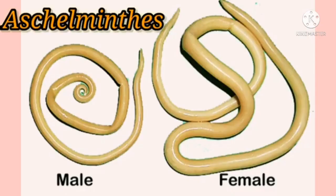Fourth phylum — phylum Aschelminthes, roundworms. Aschelminthes are bilaterally symmetrical, triploblastic animals. The body cavity is pseudocoelom. What do you mean by pseudocoelom? They have a false body cavity. They exist as free-living soil forms or as parasites. The body is round, pointed at both ends. It is unsegmented and the body is covered by a thin cuticle.